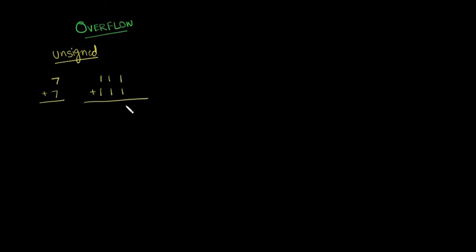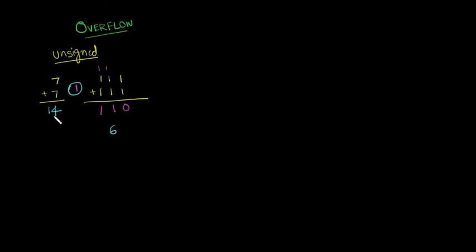1 plus 1 is 0, we carry a 1 forward. 1 plus 1 plus 1 is 1, we carry a 1 forward. 1 plus 1 plus 1 is 1, and we carry a 1 forward. We have a 1 here. But 7 plus 7 is 14. What did we get as the result? This is 4, this is 2, and this is 0 — that gives 6. But we want 14. If we append this carry bit here, then this is the correct result.